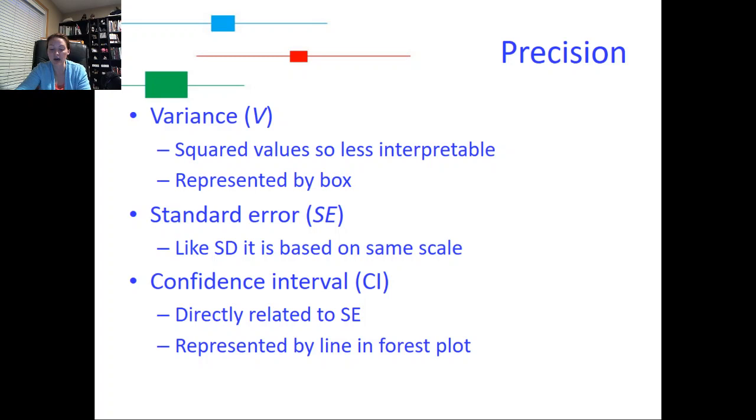So remember, as that variance goes down, the box is going to get a lot bigger. So on this slide, you can see the green box would have had the smallest variance because it's the largest box. And the red box would have actually had the largest variance because it's the smallest box. So again, how precise the effect size is is directly related to the variance. And additionally, the confidence interval is denoted by the length of the line that comes out from the box in the plot, in the meta-analysis. So the larger that confidence interval, the less precision that we have with that effect size.